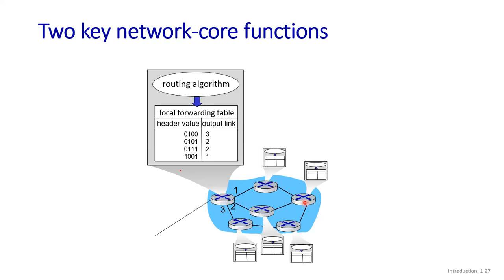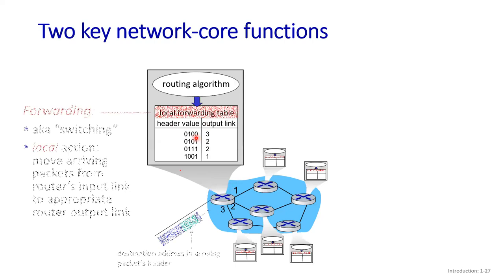Since the core is a mesh of interconnected routers, always remember that every single router has a table known as a forwarding table. Every router has a forwarding table implemented inside it, containing header values and their corresponding outgoing output links.